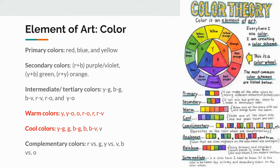One color scheme that everyone focuses on is primary and secondary colors. Primary colors are red, blue, and yellow. Secondary colors are created by mixing the primary colors: red and blue make purple (also known as violet), yellow and blue make green, and red and yellow make orange. Intermediate, also known as tertiary, colors are created by mixing a primary color with its secondary color neighbor, giving us six tertiary colors.